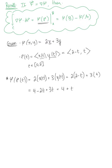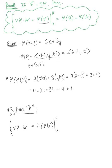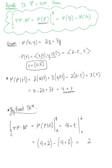Now we apply the fundamental theorem of line integrals. The line integral over c of the gradient of phi dot d vector r equals phi of r(t) evaluated from the endpoints of our curve. We know phi of r(t) equals 4 plus t, and the endpoints on t are 0 to 2. Evaluating, we get (4 plus 2) minus (4 plus 0), which again gives us the final answer of 2.